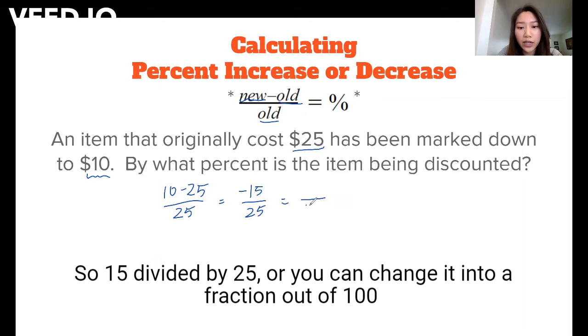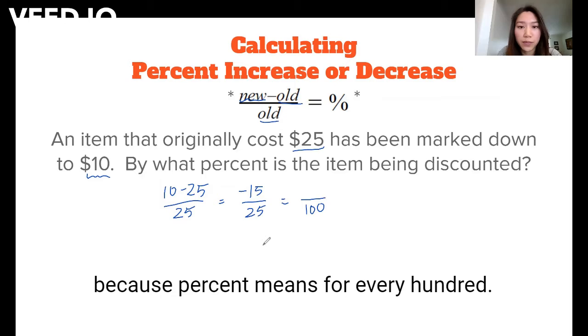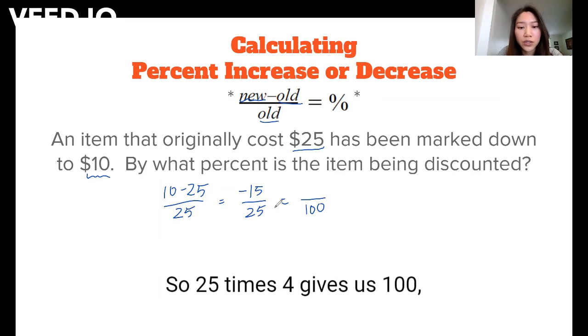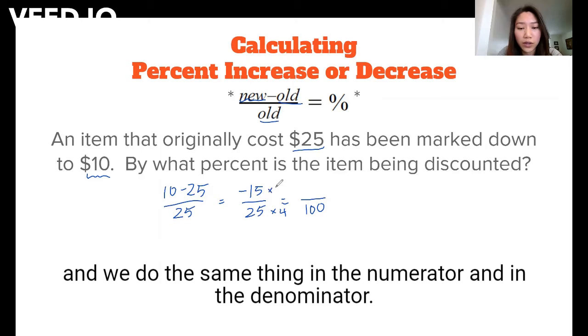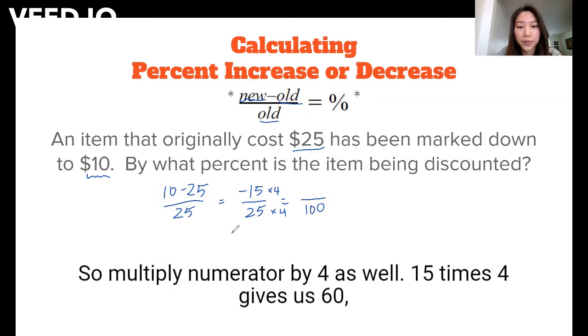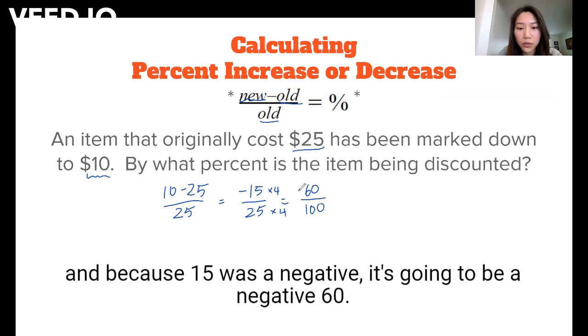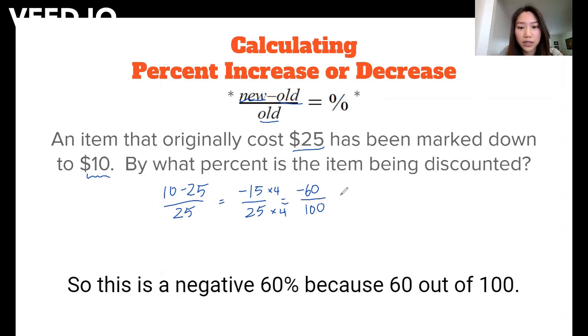Or you can change it into a fraction out of 100 because percent means for every 100. So 25 times 4 gives us 100, and we do the same thing in the numerator and in the denominator, so multiplying the numerator by 4 as well. 15 times 4 gives us 60, and because 15 was a negative, it's going to be a negative 60.